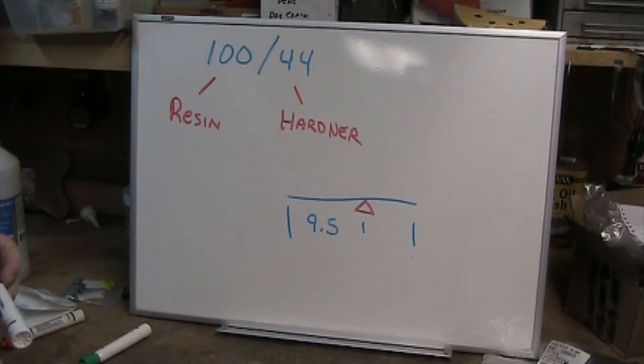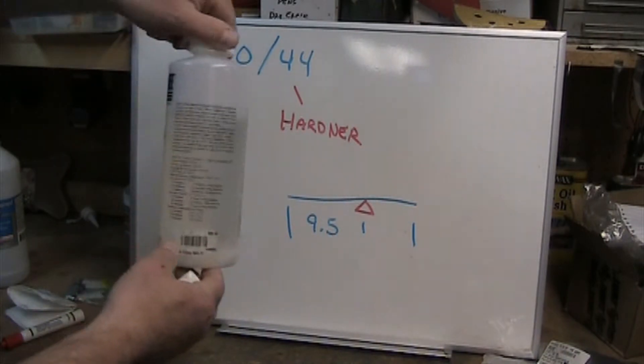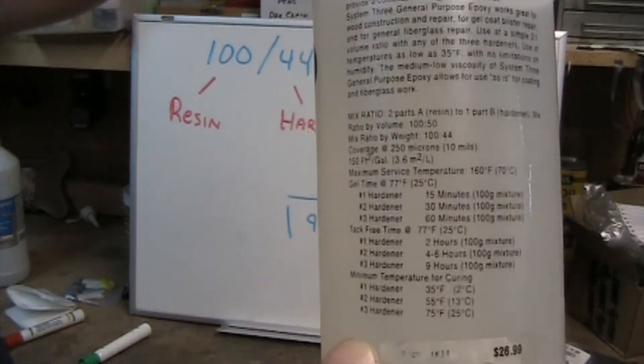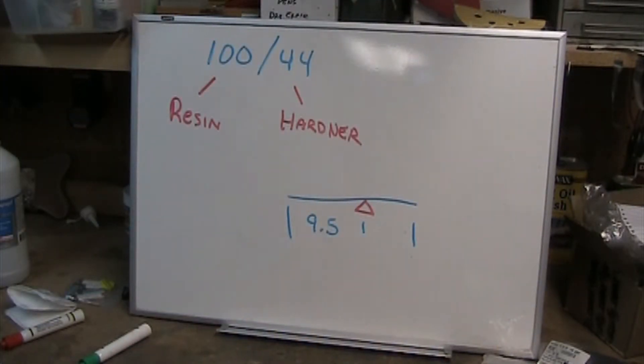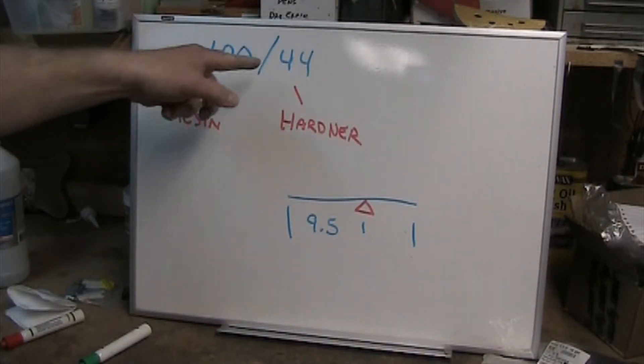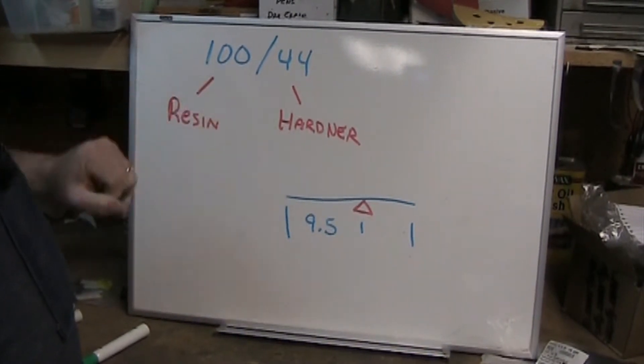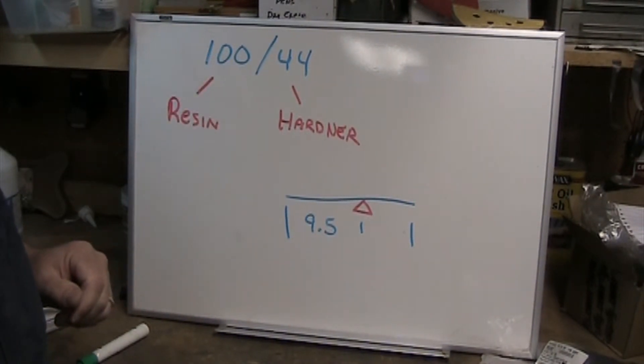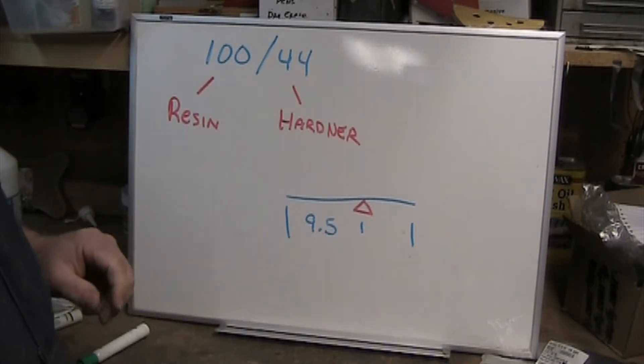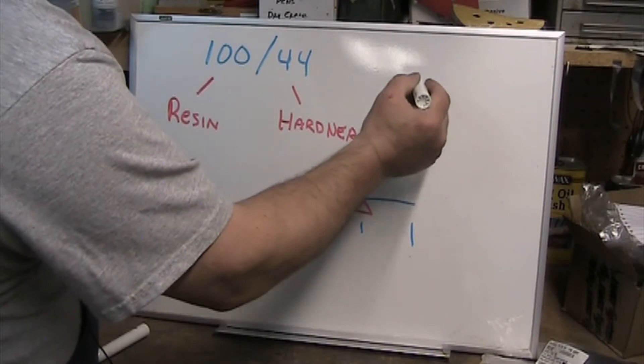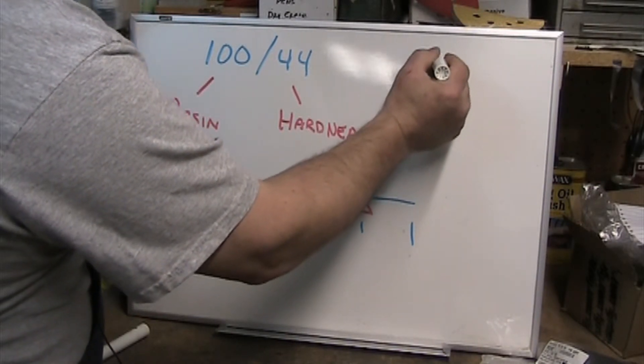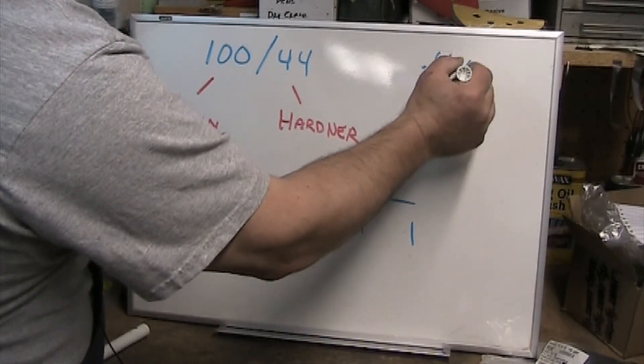Before we leave the whiteboard, let's talk about the epoxy we're using. It's a System 3 general epoxy, a 100 to 44 by weight ratio. Resin's at 100, hardener's at 44. If we divide 100 by 44, which is a ratio, we come up with 0.44.